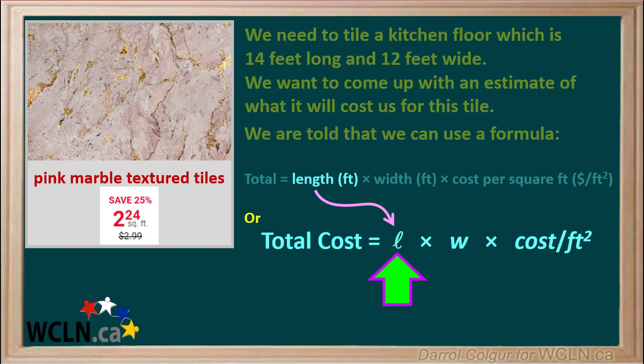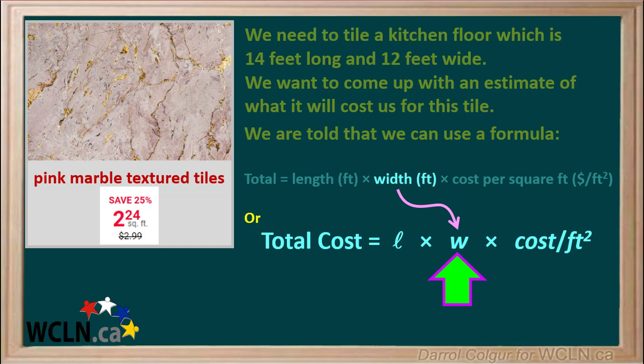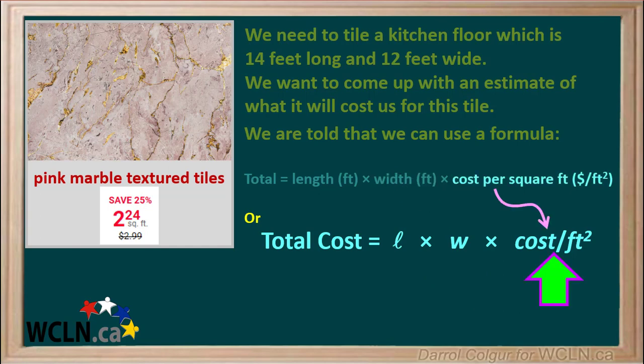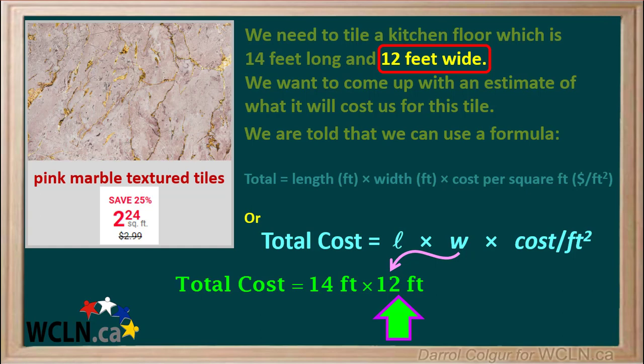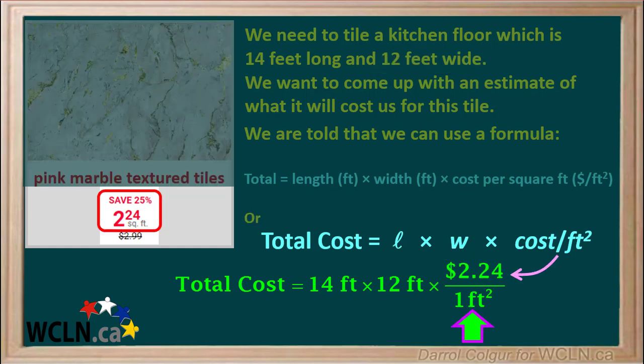We'll start with length, abbreviated as L, and multiply by W, and multiply these by cost per square foot. Putting all our values into this equation: total cost equals 14 feet for L, times 12 feet for W, times $2.24 per square foot for the cost per square foot.